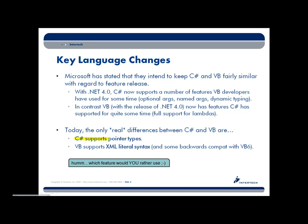In C-Sharp land, we have pointers. I don't use them hardly at all — the only time I've ever dabbled with them was for some complicated interop. Beyond that, they're just not a very useful feature for most C-Sharp programs. VB, on the other hand, has something I really wish C-Sharp did have, and that's the nice VB literal syntax. Beyond these two pieces, the languages are really in sync now with the release of .NET 4.0.